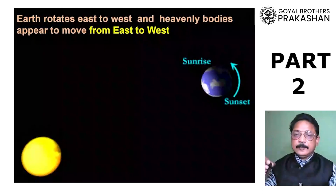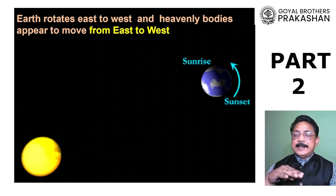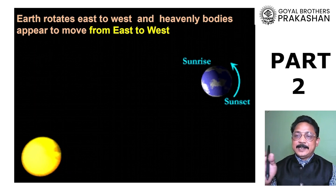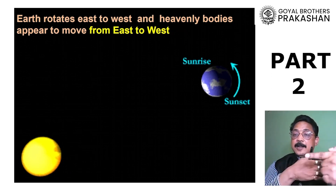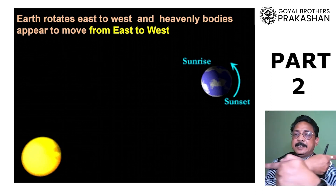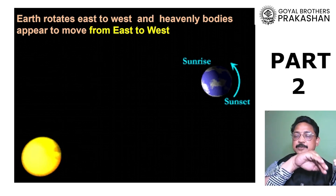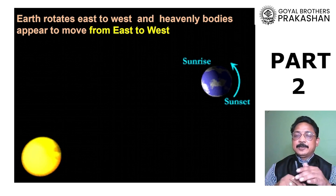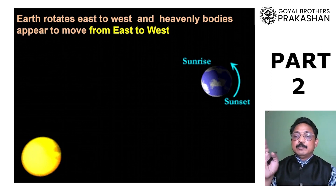The next effect is that earth rotates from west to east, and therefore the planets, stars, sun, and moon appear to move from east to west. It is exactly like when your train is traveling in one direction, you find objects moving in the opposite direction. So we can conclude that if the sun and moon appear to be moving from east to west, that means the rotation of the earth is taking place from west to east. Rotation of the earth is responsible for the apparent movement of the planets from east to west.